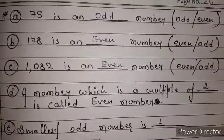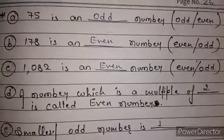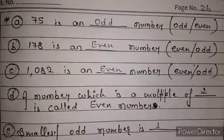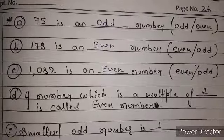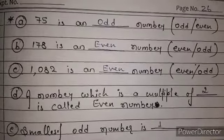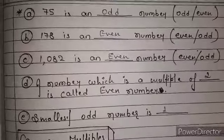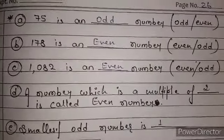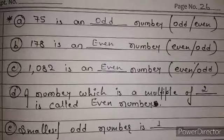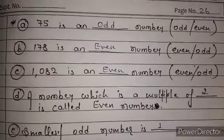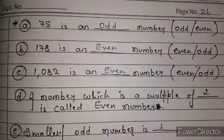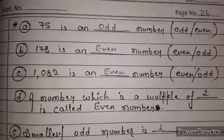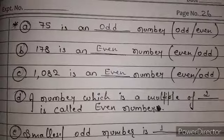In the next question, it has been asked to fill in the blanks as in 3A. 75 is an event number because it is divisible by 2. We know that 75 is not divisible by 2, so it is an odd number. 178 is an event number because it is divisible by 2. Similarly, 1082 is an event number because it is divisible by 2, or in other words, we say that it is a multiple of 2. In question D, a number which is a multiple of 2 is called an event number. The smallest odd number is 1.